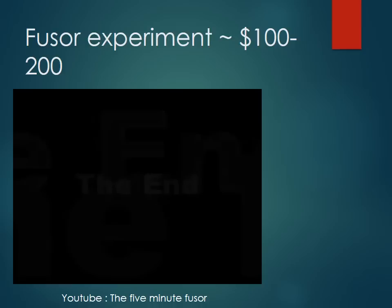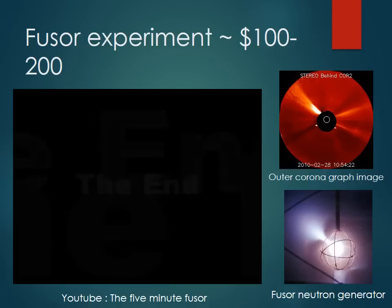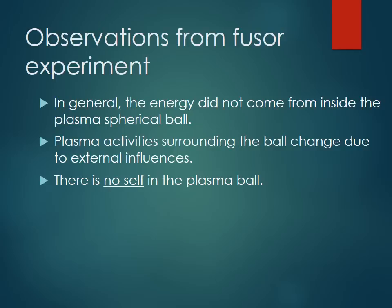This is how we explain an externally driven Sun. Comparing that to the real Sun, you can see on the picture bright filaments pointing out from the Sun, just like what happens in a fusion neutron generator in a similar fashion. From this observation, we find that the energy did not come from inside the plasma spherical ball — it comes from the outside. Those plasma activities around the ball change due to external influences. We can clearly say there is no self in this plasma ball. The plasma ball cannot sustain itself — it relies on energy from the surrounding to create it, and there is a process to sustain such a thing.